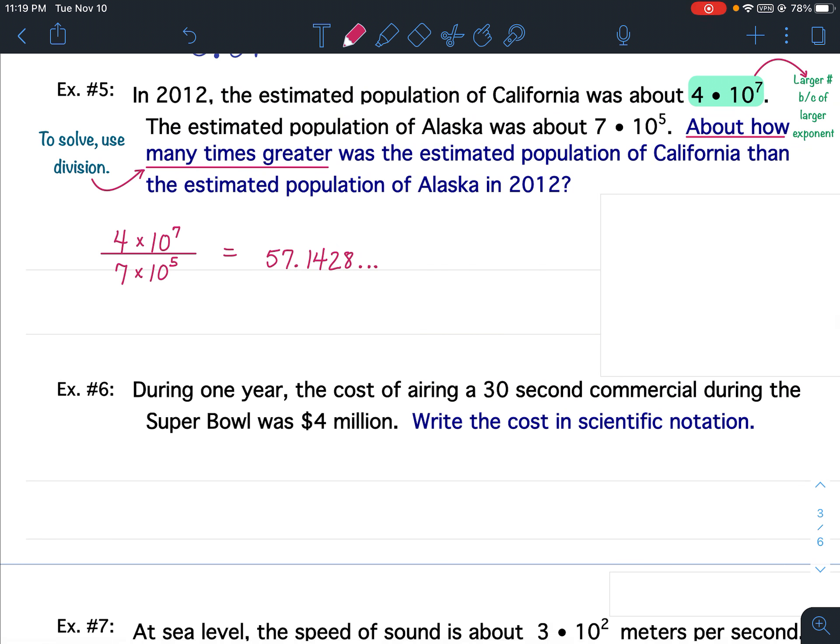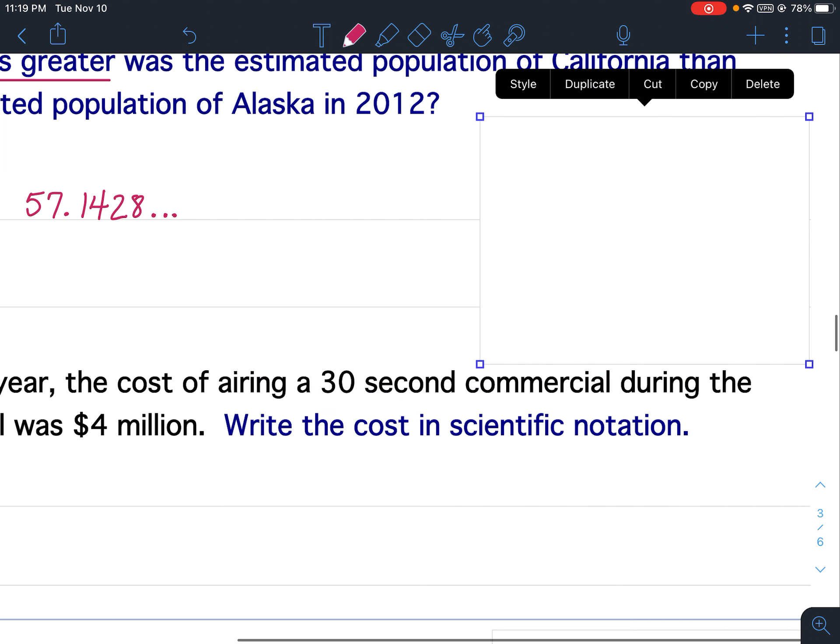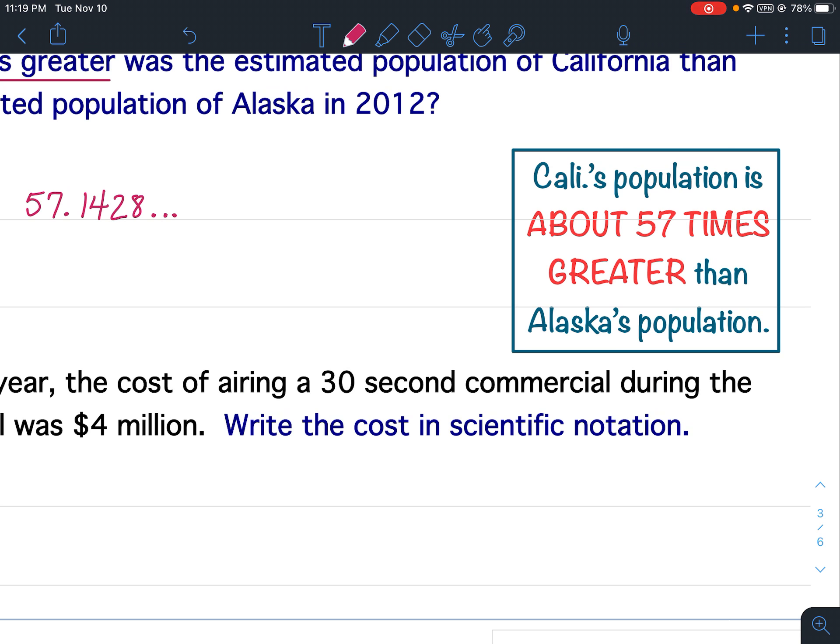Now, it says, what is the estimated? How many times greater was the estimated? When you see the word about, up here, you see the word about? That means we're not going to put down 57.1428, blah, blah, blah. We're going to make this a nice, easy number to work with. Alright. So, since it's 57.1, that means it's closer to 57. So, my final answer is going to be, California's population is about 57 times greater than Alaska's population.